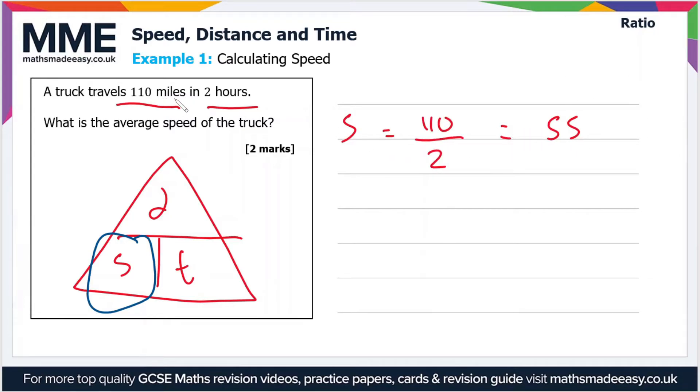And now we've got the units in miles and hours, so our units for speed will be miles per hour or MPH, if you prefer to write it like that.